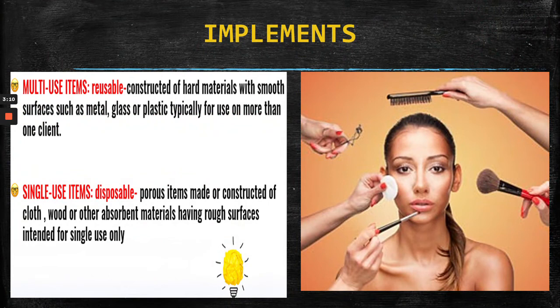Next we have our implements. Please make a note of the glossary terms and definitions. Multi-use items are also known as reusable; single-use items are also known as disposable. Looking at the picture on the right, most of our implements are multi-use — the only single-use item is the cotton round.